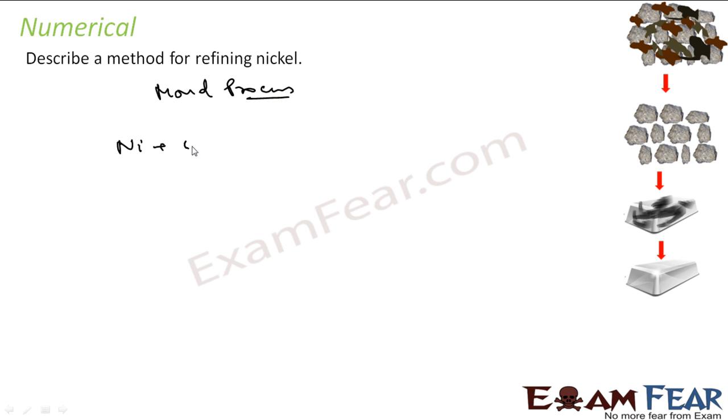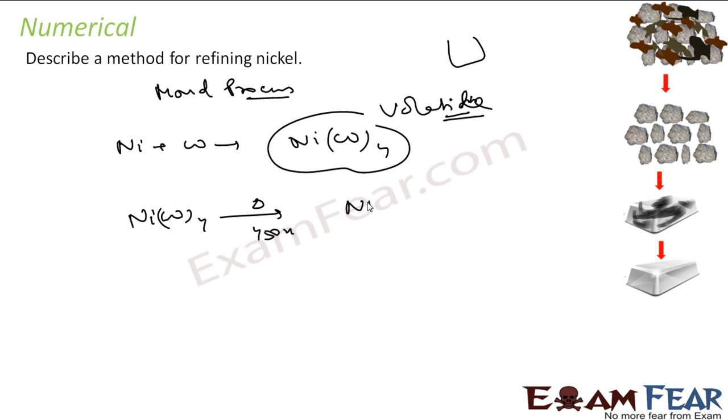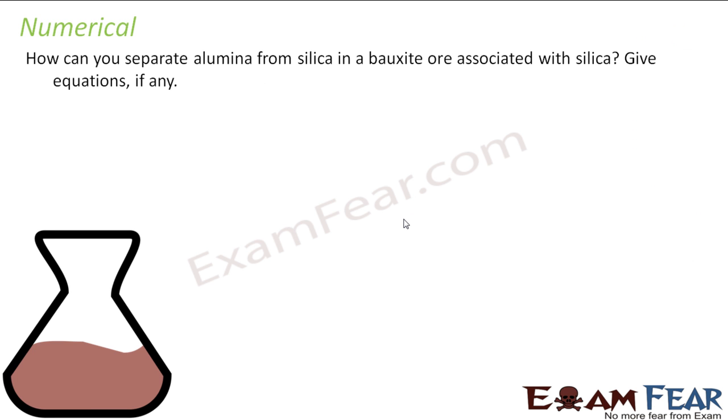The method for refining of nickel: for nickel we use Mond's process. This nickel we react with carbon monoxide to get NiCO4, and this is nickel tetracarbonyl - this is a volatile compound. Once we collect this volatile compound, when we heat it at almost 450 Kelvin, I get nickel back and four carbon monoxide.